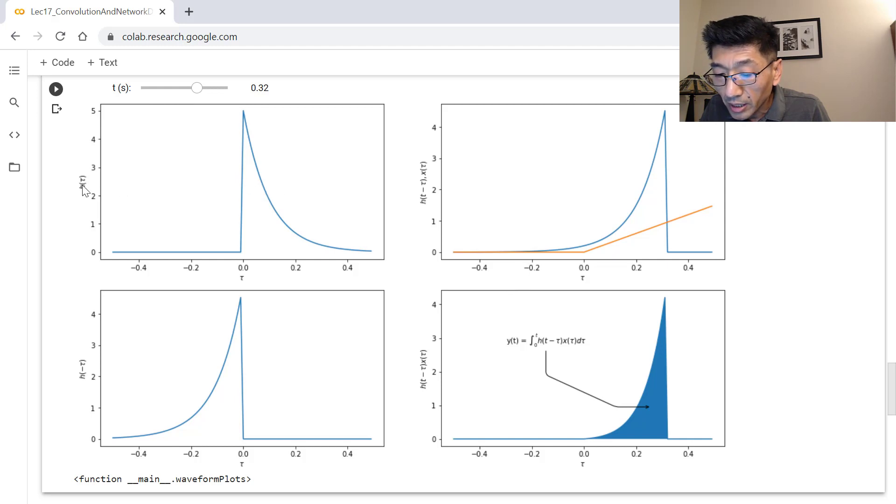So this h(tau) will not change. This has no information about t. So if I change, right now it's 0.32 seconds, so that's the t.